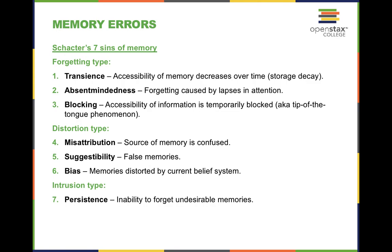Let's talk about some more memory errors. We already talked about suggestibility and false memories. Transience is when the accessibility of memory decreases over time, such as storage decay — if you do not use information or rehearse it, you have the tendency to lose it. We also have absent-mindedness: we may think we're paying attention, but our mind tends to wander or we look at our phone, and because it's really hard to focus on more than one item at a time, we forget aspects of what we're supposed to be listening to because of lapses in attention. Some people think they're better at multitasking, but it will distort their memory. Blocking is when the accessibility of information is temporarily blocked — also known as the tip-of-the-tongue phenomenon.